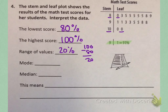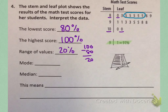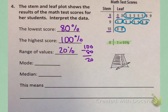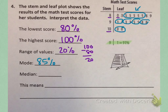Now we need to find the mode — the number that occurs the most often. I'm going to look at the leaves and see which ones occur the most. I see a whole bunch of 5's on one stem. Looking through the leaves, I see 2 ones, 2 threes, 2 fives, 2 eights, and 2 zeros. The one that occurs the most often is the 5 on that stem, which is 85. So the mode is 85% — most students made 85% on the test.